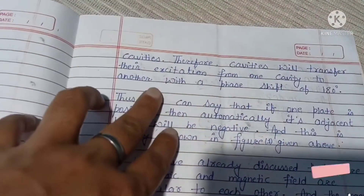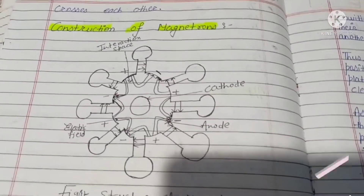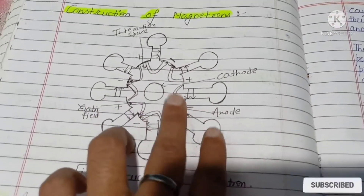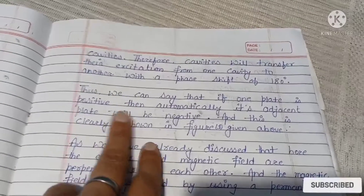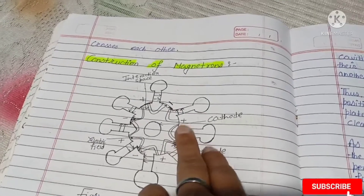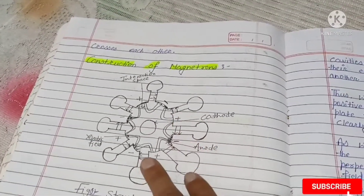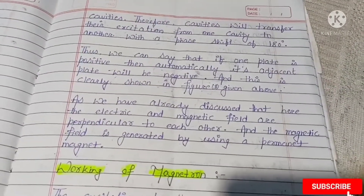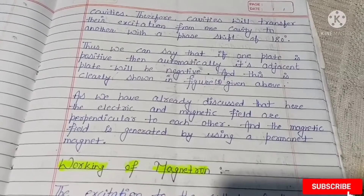It is to be noted that there exists a phase difference of 180 degrees between adjacent cavities. Therefore, cavities will transfer their excitation from one cavity to another with a phase shift of 180 degrees. Thus we can say that if one plate is positive, then automatically its adjacent plate will be negative — positive, negative, positive, negative — as clearly shown in figure one. The magnetic field is generated by using a permanent magnet.